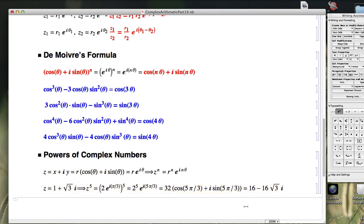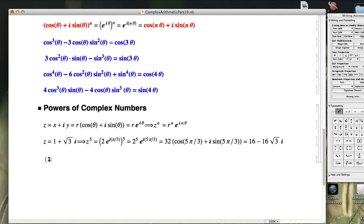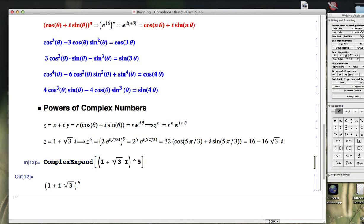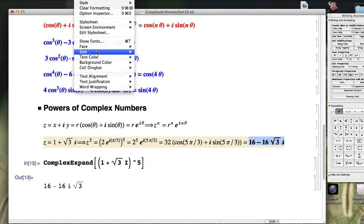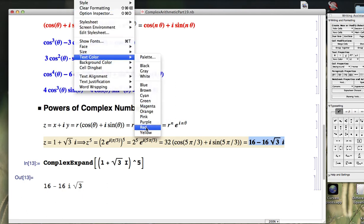We can check it by having Mathematica do it in rectangular coordinates as is. I've got to use complex expand to actually have it do it here. There we go, 16 minus 16i square root of 3, the same answer that I got here.